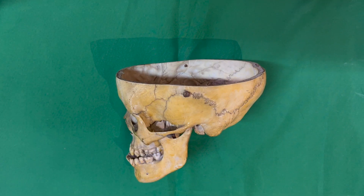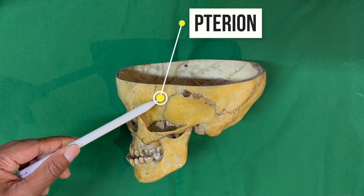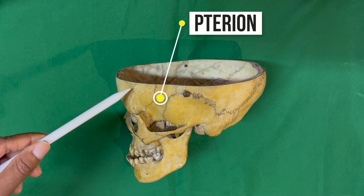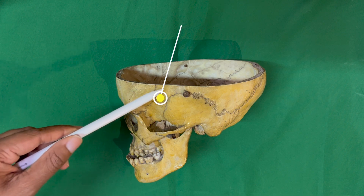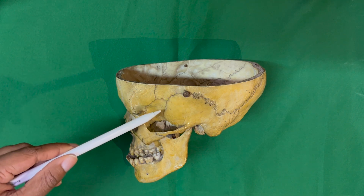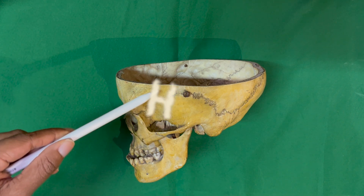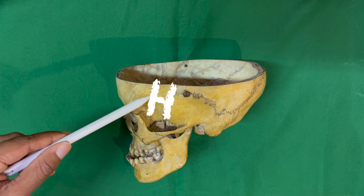The pterion is the area in the temporal fossa where four bones — the frontal, parietal, temporal, and sphenoid — adjoin each other across an H-shaped suture.